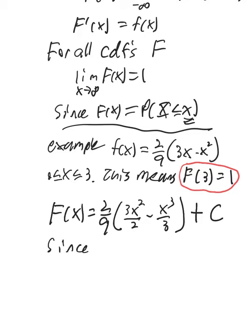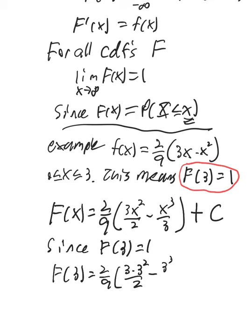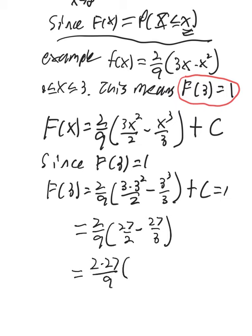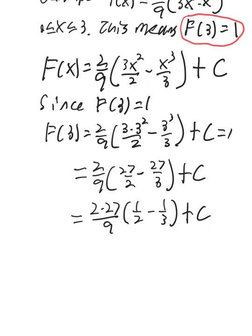So since f of 3 equals 1, we'll get, let's plug into this formula, f of 3 would be 2 ninths, 3 times 3 squared over 2 minus 3 cubed over 3, plus c. That's got to be 1. Let's go ahead and do the arithmetic. So that's 27 halves minus 27 thirds. We can factor out the 27, and we just get 1 half minus 1 third. Let's not forget the plus c there.